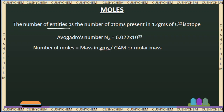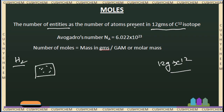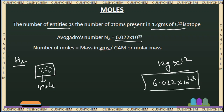We will learn more about moles. One mole is defined by the number of atoms present in 12 grams of C-12 isotope. The number of C-12 atoms present in 12 grams of C-12 is 6.022 × 10²³ atoms of carbon-12 isotope in 12 grams.